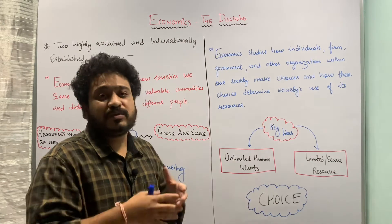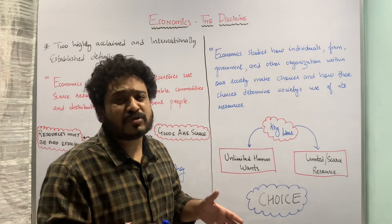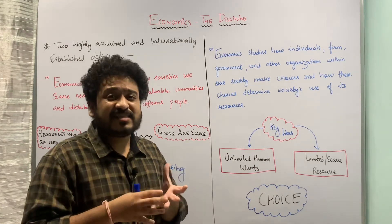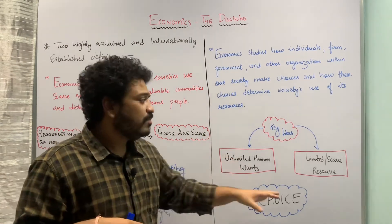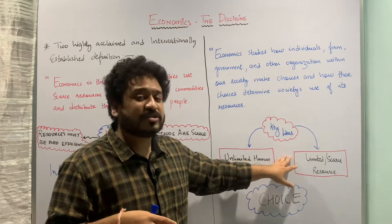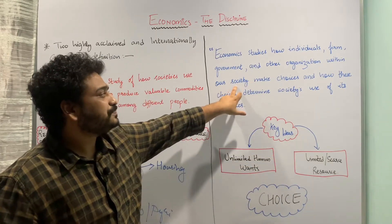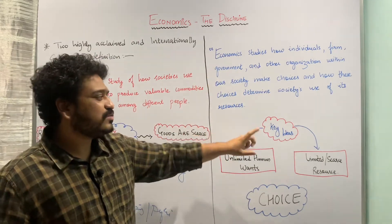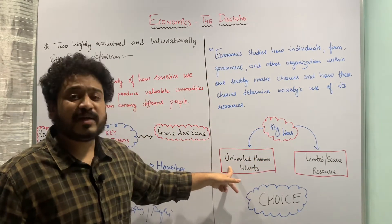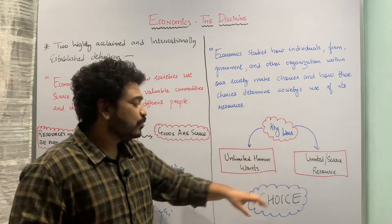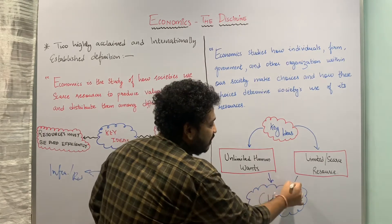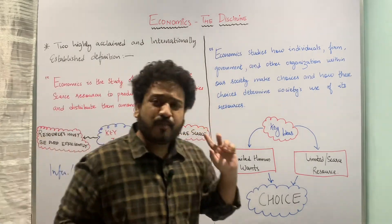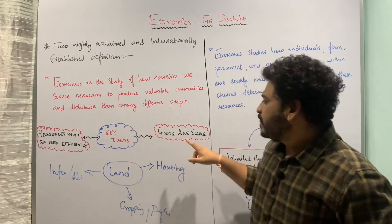The wants are unlimited, but the underlying resources are limited — as we saw with land. There is a choice to be made regarding the optimum use of that resource: whether to use land for agriculture, housing, or something else, since it has many possible uses. Human wants are unlimited but land is scarce, so the choices society makes determine its use of resources.